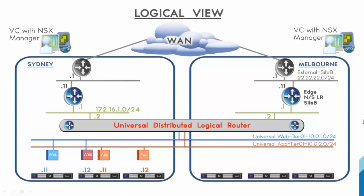What we have here is the logical topology that I'll consistently use throughout the presentation. We have two sites. On the left hand side, we've got site Sydney, which will be the primary active site. And on the right hand side, we have site Melbourne, which will be the secondary active site. We're running NSX 6.2 in this model with vCenter 6.0.